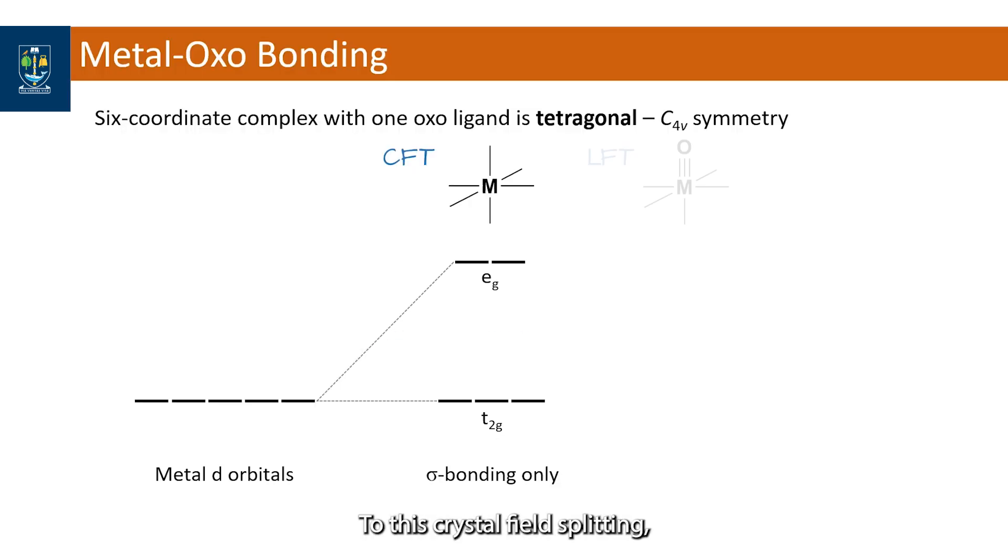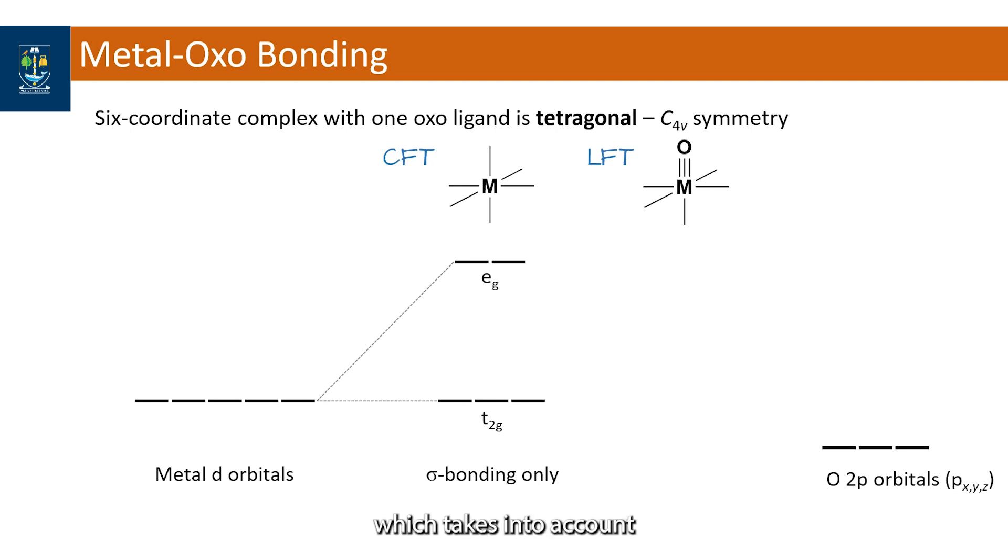To this crystal field splitting, we apply ligand field theory, which takes into account the ligand types. For the oxo ligand, we add its three 2p atomic orbitals to the right side of the diagram.